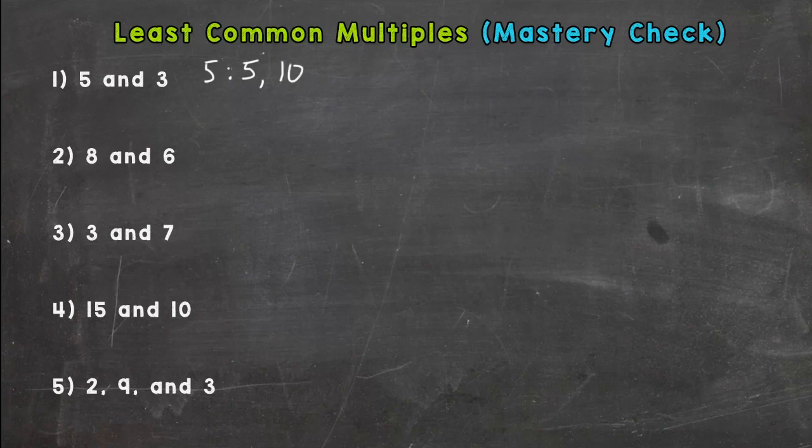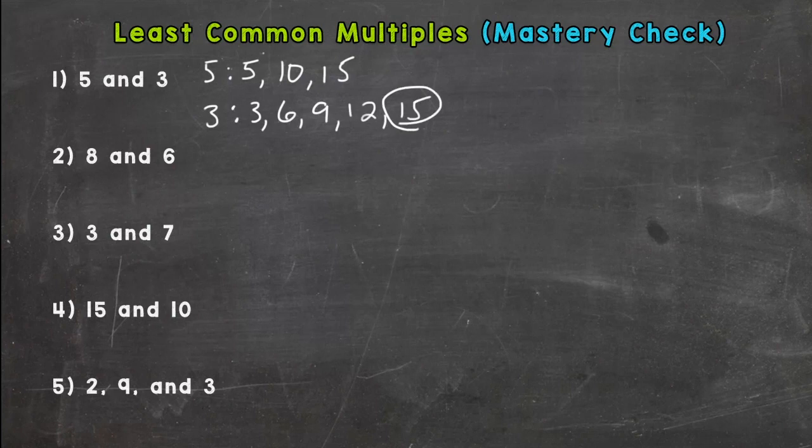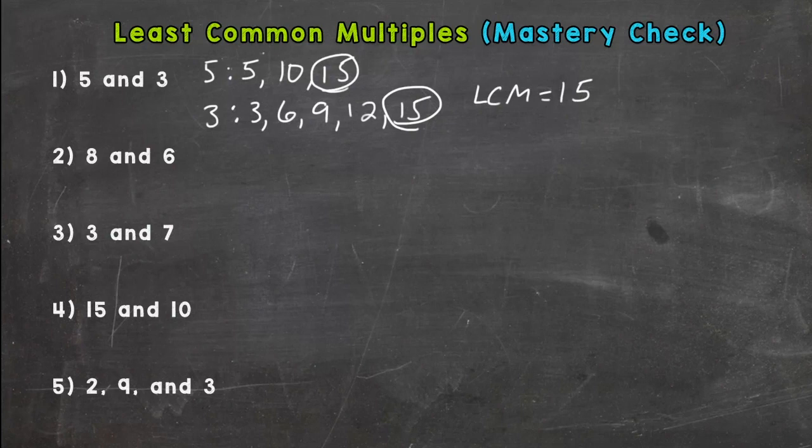Your lists should look something like this depending on how many multiples you wrote out for each. But for number 1, we run into a common multiple at 15, so your LCM is 15. Number 2, we have 8 and 6.